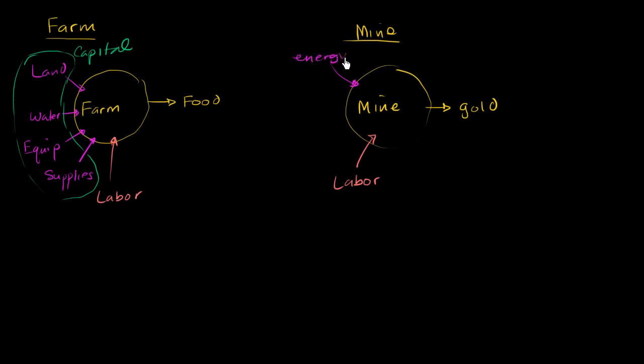You also need energy, maybe to operate your equipment. And actually I would put energy in here too, some of which comes from the sun, but some of which you might have to purchase or have somehow. And then you would also need equipment and supplies. Maybe you could consider energy a supply, but you also might need tires or something like that. You might need food in order to provide for the labor.